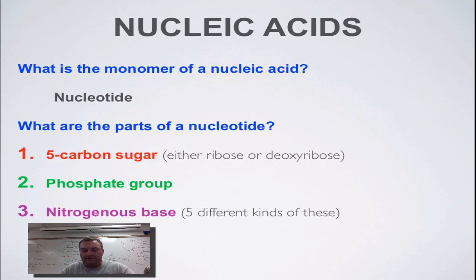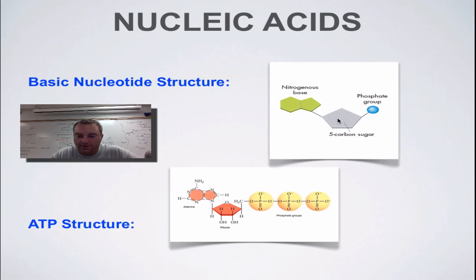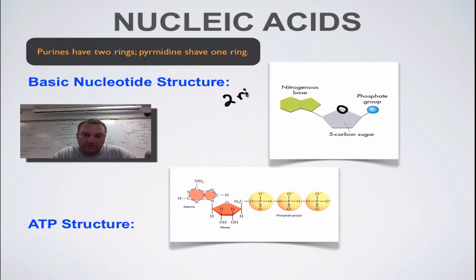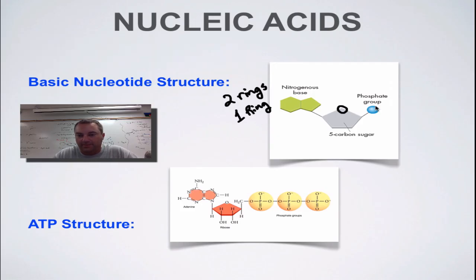Believe it or not, somebody has the ability to draw a better picture than I do. Here's your basic nucleotide structure. There's your five-carbon sugar: one, two, three, four, and the fifth carbon is right up here. That's an oxygen molecule at that point. Here's your nitrogenous base. Nitrogenous bases either have two rings, as you can see in this picture, or only one ring. We'll learn more details about that later. Then we have a phosphate group, normally represented with a P.